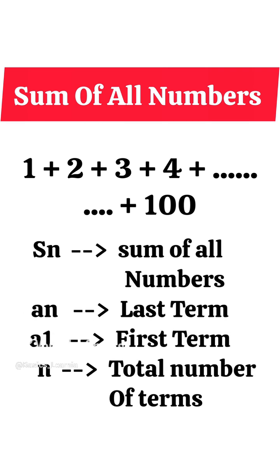So we have Sn for sum of all numbers, An for last term, a1 for first term, n for total number of terms.